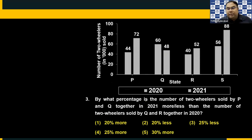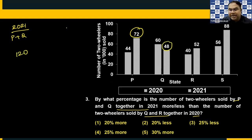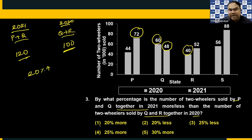Third question: By what percentage is number of two wheelers sold by P and Q in 2021 more or less than number of two wheelers sold by Q and R in 2020? P plus Q in 2021: 72 plus 48 equals 120. Q and R in 2020: 60 plus 40 equals 100. Comparing with 100, clearly it is 20 percent more. Twenty percent more is present in choice one.